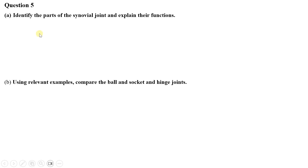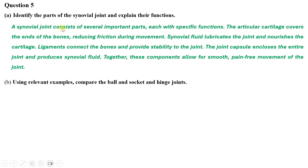Question five (a) — identify the parts of the synovial joint and explain their functions: a synovial joint consists of several important parts. The articular cartilage covers the ends of the bones, reducing friction during movement. Synovial fluid lubricates the joint and nourishes the cartilage. Ligaments connect the bones and provide stability. The joint capsule encloses the entire joint and produces synovial fluid. Together these components allow for smooth, pain-free movement.